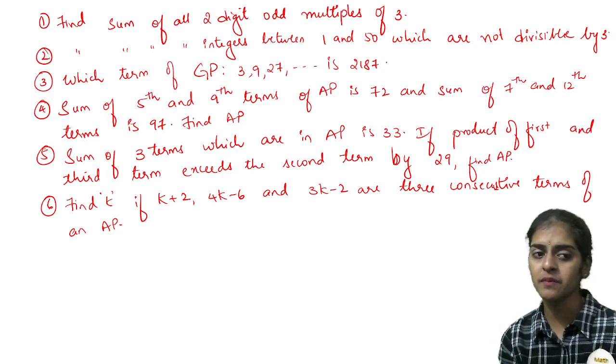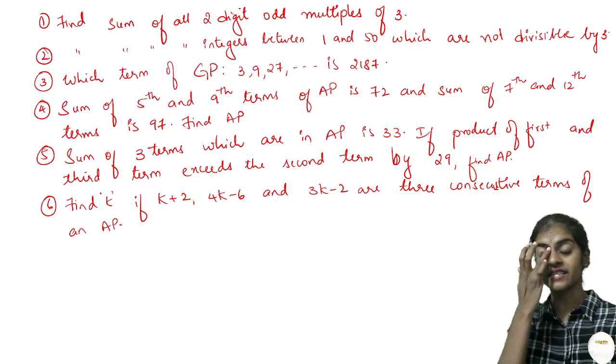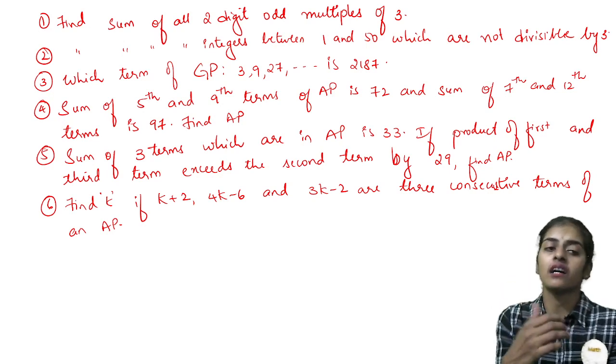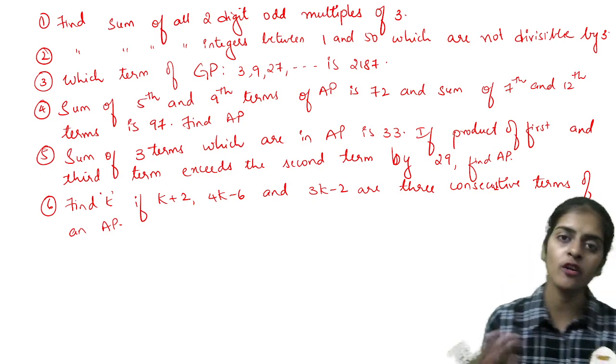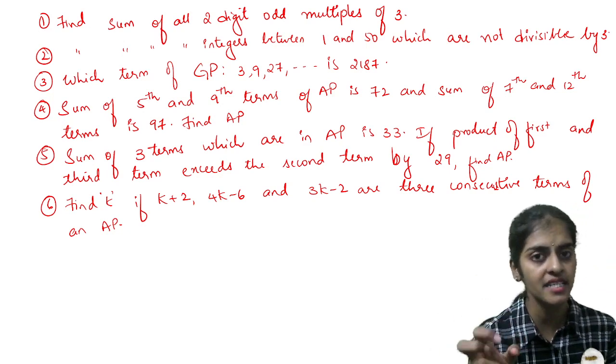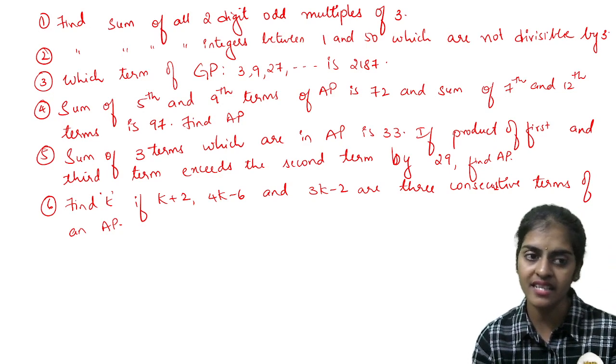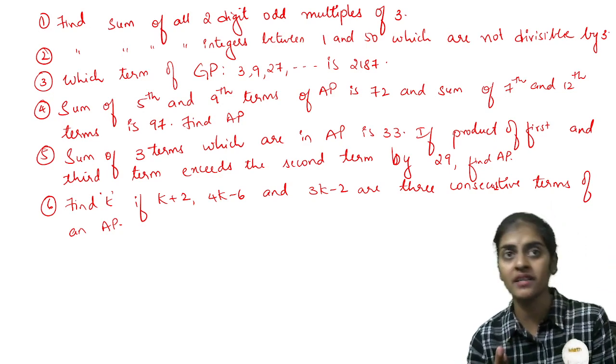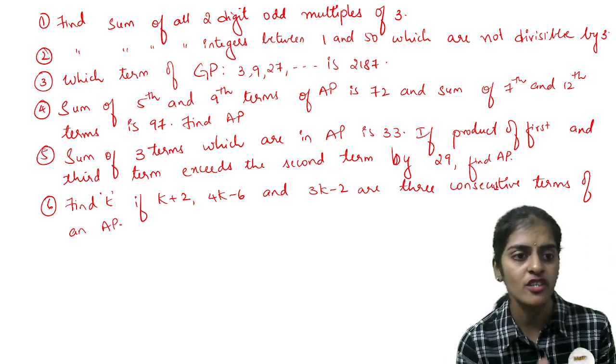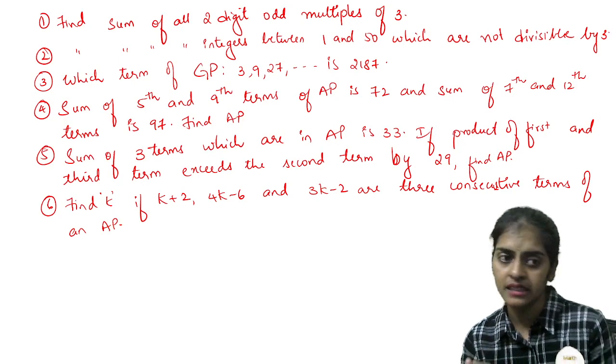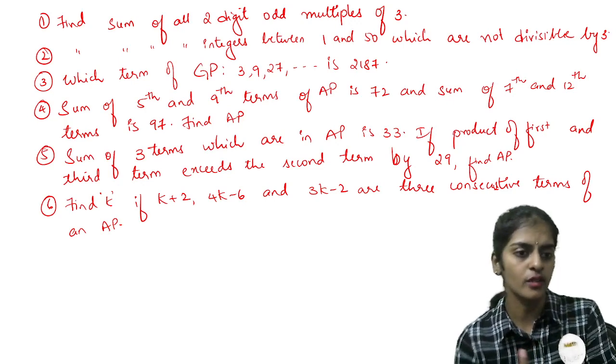Next: which term of the GP 3, 9, 27 is 2187? This question you can expect in GP or AP also. 2187 will be the nth term. First term is 3, common ratio is 9 divided by 3, which equals 3.